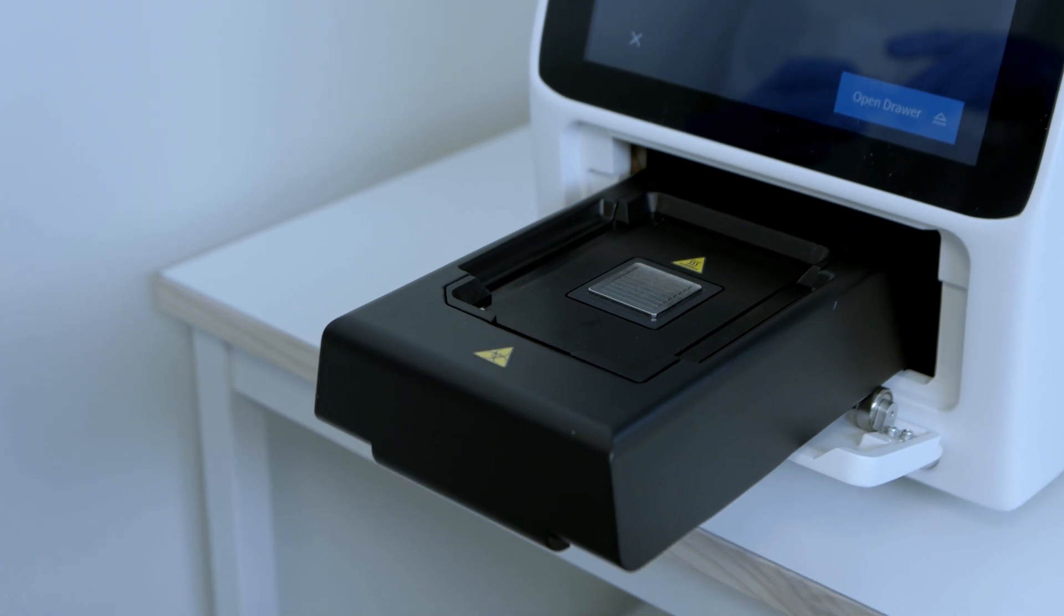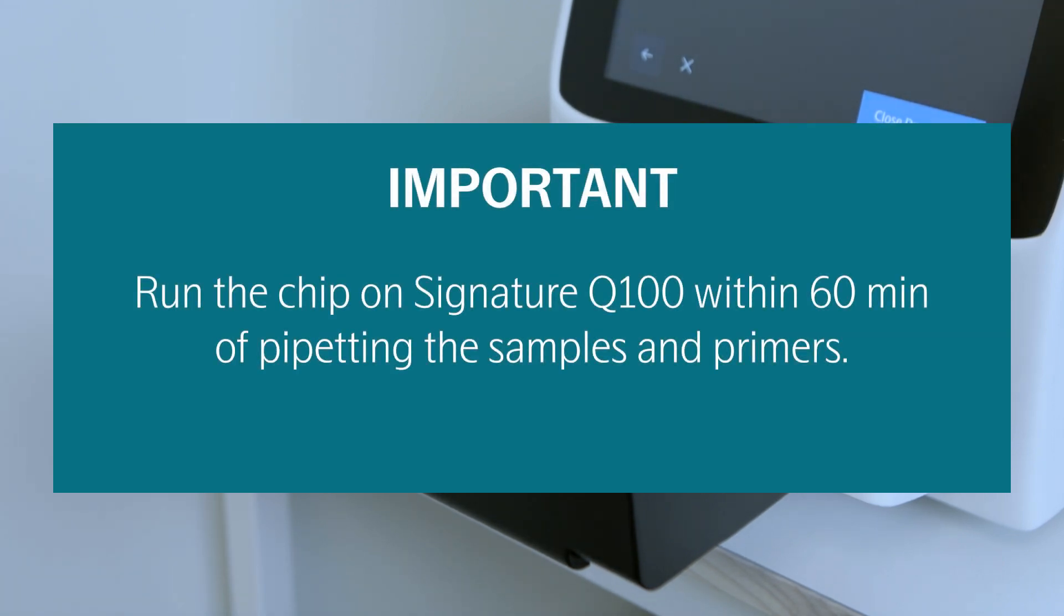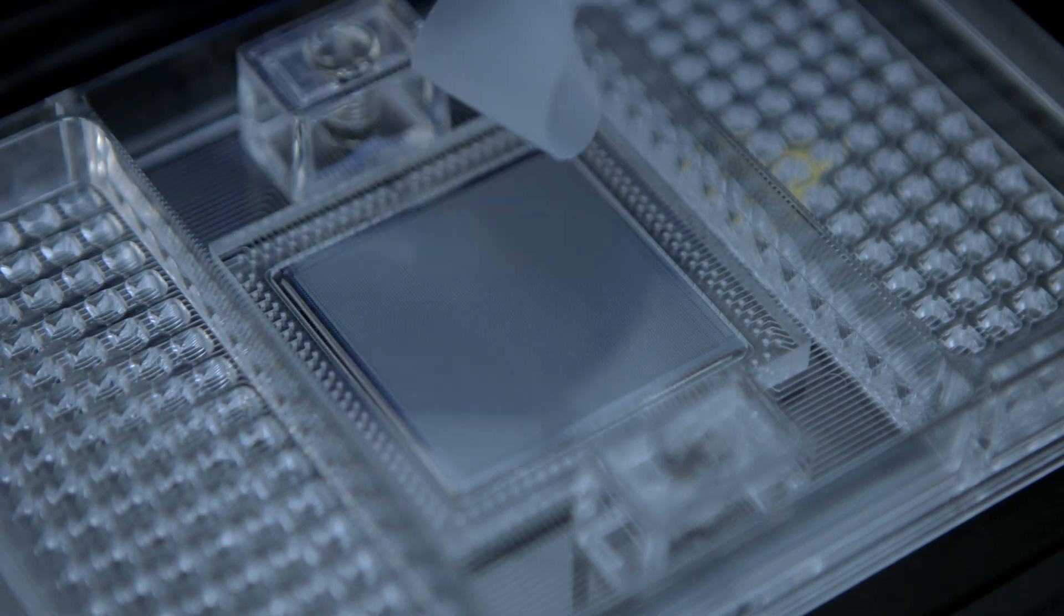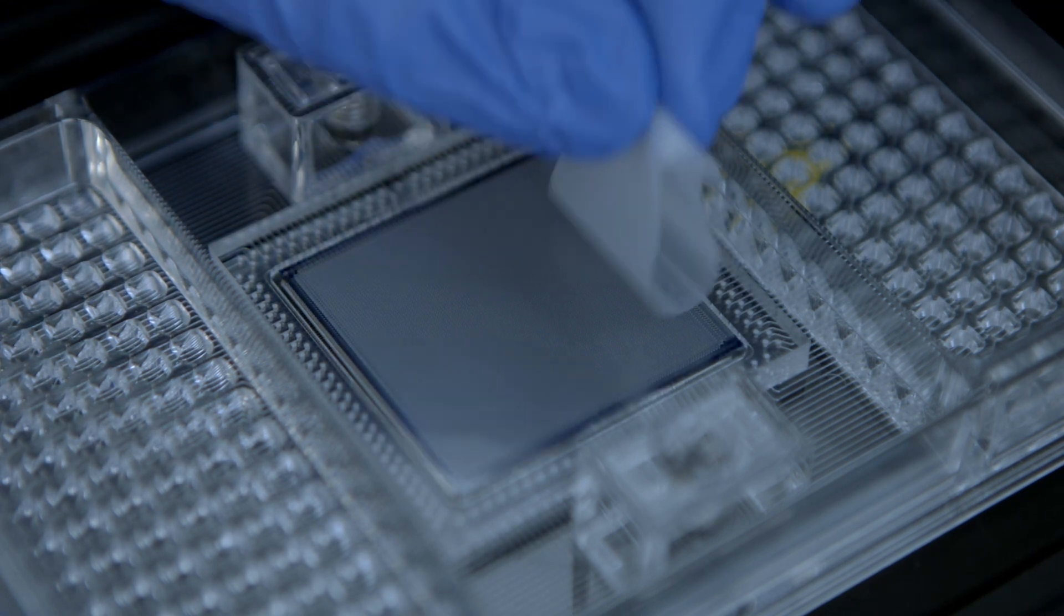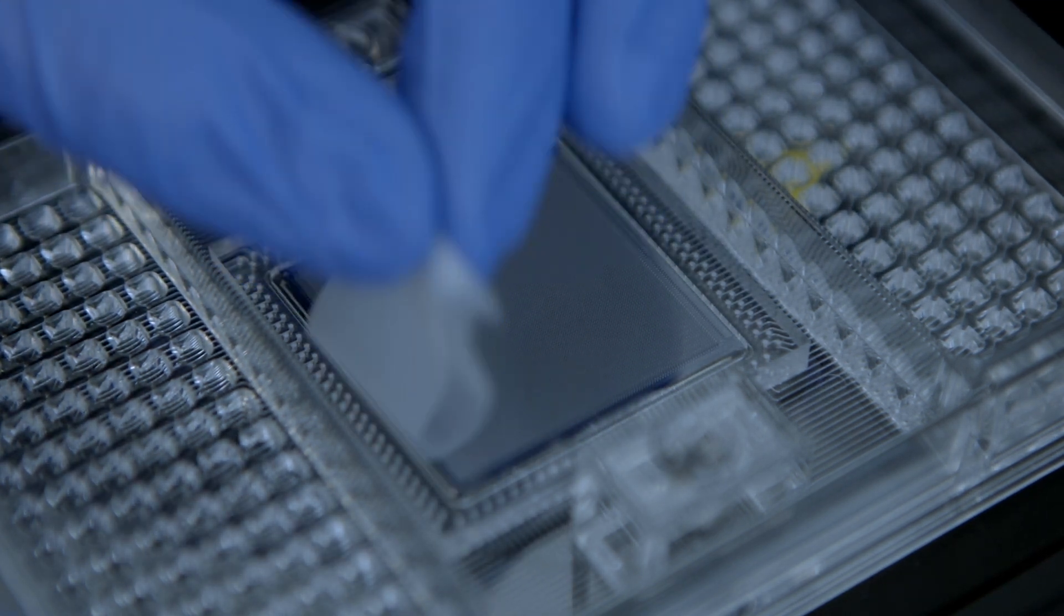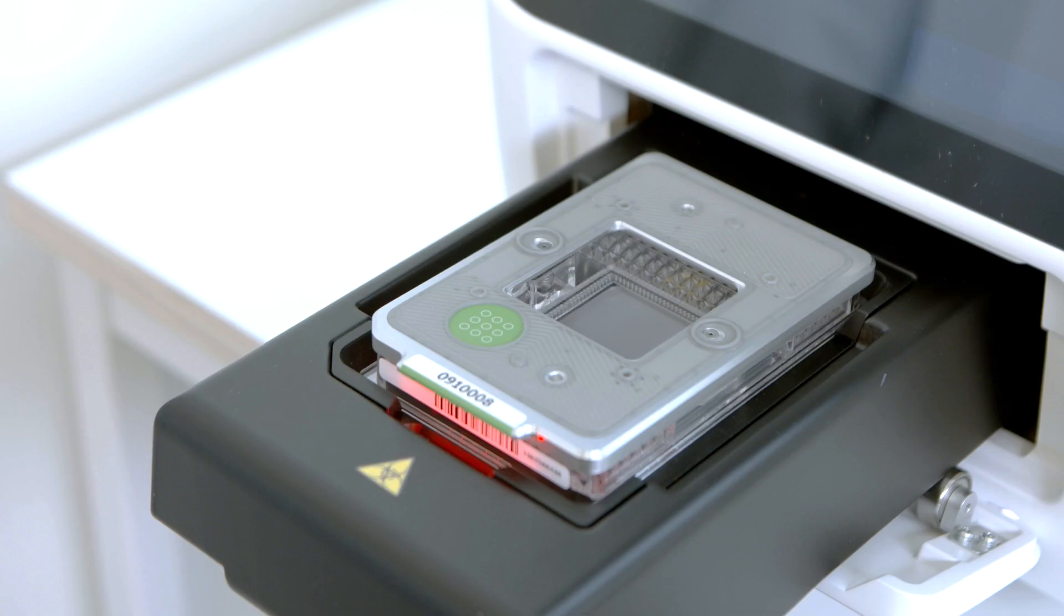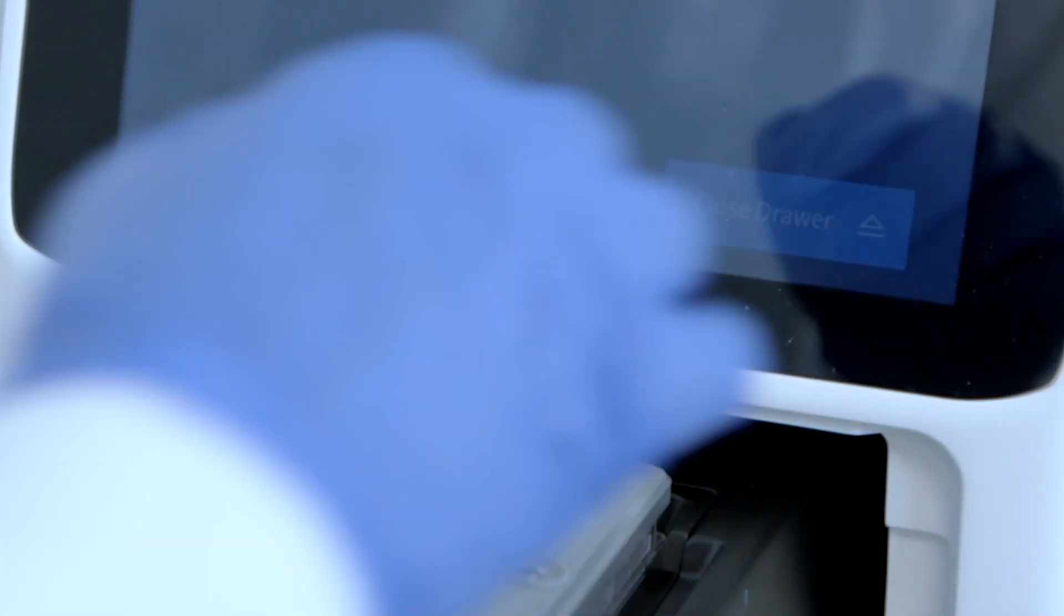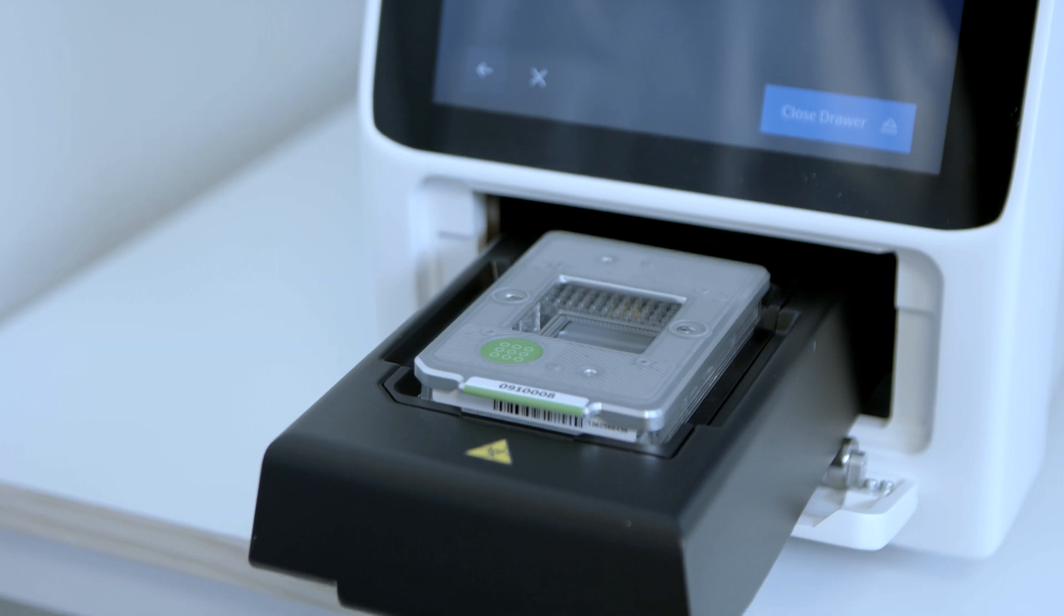With the Insert the Chip Containing Samples screen on display, place the IFC in the drawer. Use clear tape to remove any dust particles or debris from the IFC surface if necessary. Place the interface plate over the IFC. Align the notched corner of the IFC with the notch on the drawer, and face the barcoded edges of the IFC and interface plate forward. Close the shuttle drawer by tapping Close Drawer. The system scans the IFC and interface plate barcodes, then closes the drawer.